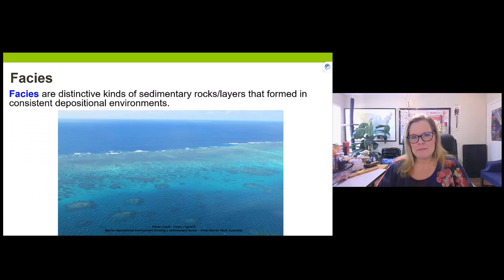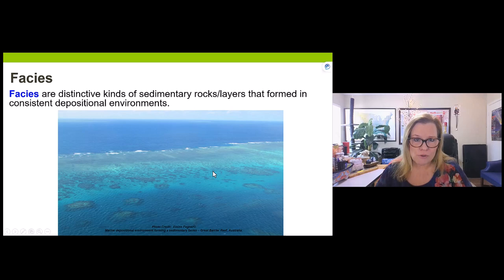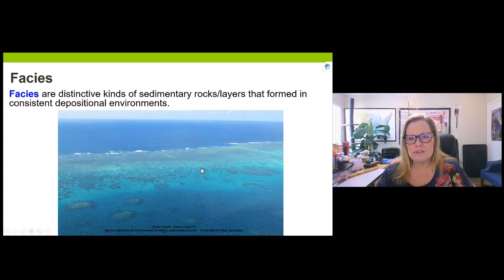Let's talk about sedimentary facies. Facies are different types of sedimentary rocks and layers that formed in similar or consistent depositional environments. This is a carbonate facies referring to the open ocean — the Great Barrier Reef in Australia, photographed from a helicopter. The reef creates its own distinctive set of rock layers unique to that environment, which is what a facies represents.